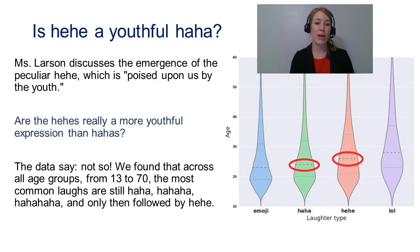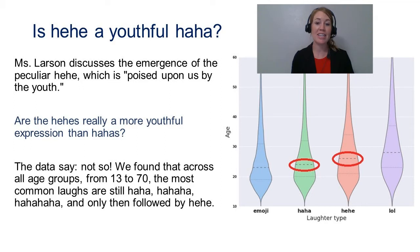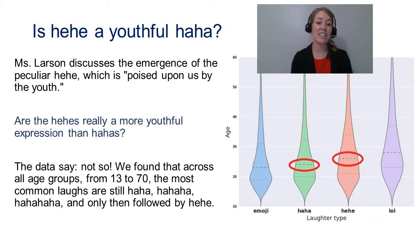Looking at the graph on the right, listed at the bottom are emoji, ha-ha, he-he, and LOL, and on the left the graph represents the age of the user. It does appear that younger people use emojis more than older people. But contrary to what Larson claimed, he-he is actually being used more than ha-ha by older folks — you can see in the graph that the dotted line is higher for he-he than ha-ha. So here is some real data and real evidence that goes against what Larson had claimed.